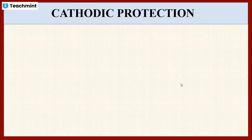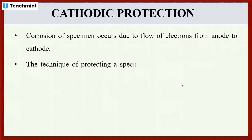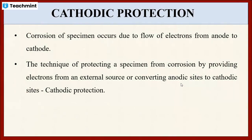Usually metal corrosion takes place due to the transfer of electrons from the anodic region to the cathodic region, not from the cathodic region to the anodic region. During the cathodic protection technique, the metal specimen is protected from corrosion by providing electrons from an external source or by converting anodic sides into cathodic sides. This technique is known as cathodic protection.